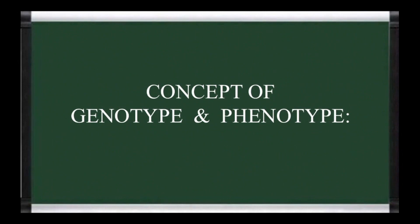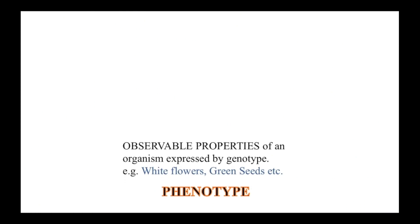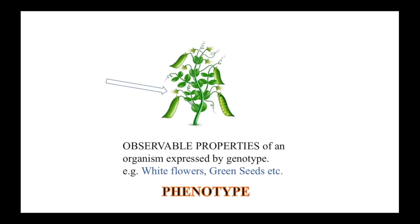Out of the many terminologies related to genetics, first we have to study what is genotype and what is phenotype. Phenotype is nothing but the property which can be observed externally. For example, you can see in the picture, flowers are white in color. Seeds are green in color. Such properties that can be observed externally with your eyes are nothing but the phenotype.